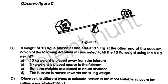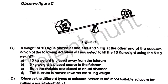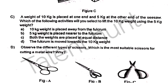10 kg should be kept away from the fulcrum. 5 kg should be kept more close to the fulcrum. This is how we use the lever to balance and lift the heavier weight.